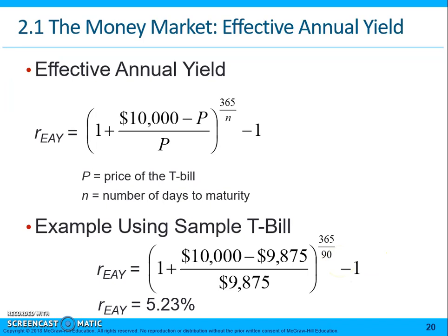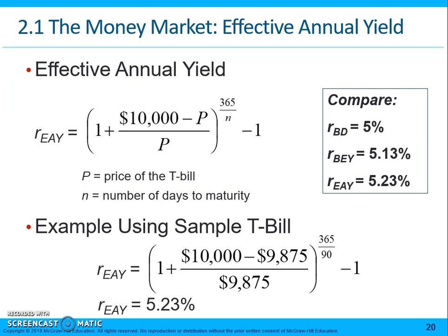That gives us an effective annual yield of 5.33%. Comparing all three: our bank discount rate was 5%, our bond equivalent yield was 5.13%, and our effective annual yield is 5.33%. The bond equivalent yield and effective annual yield will always be at least equal to, and in most cases greater than, the bank discount rate.